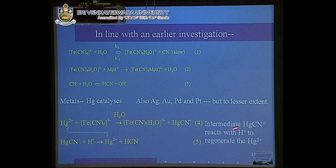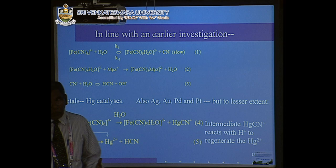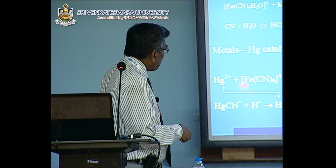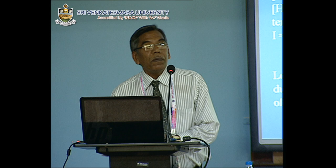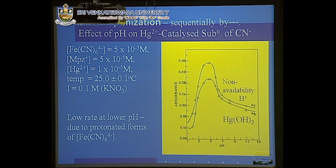The intermediate Hg-CN reacts in acidic medium to regenerate the catalyst. This is the principle of catalysis — the catalyst must be regenerated at the end of the reaction. If the catalyst is not regenerated, the reaction is not considered catalytic — it may just be a promoter reaction.